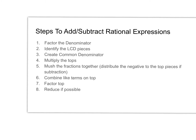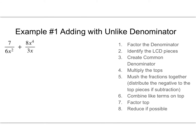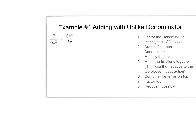So again, as in the last video, here are the steps: factor the denominator, identify LCD pieces, and create a common denominator — we didn't see a lot of these in the previous video but we will now. Then we're going to multiply the tops, mush the fractions together, combine like terms, factor the top, and then reduce.